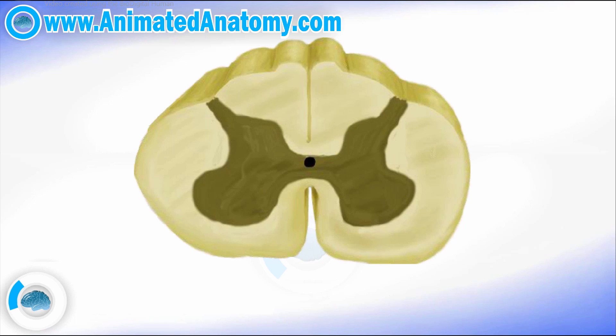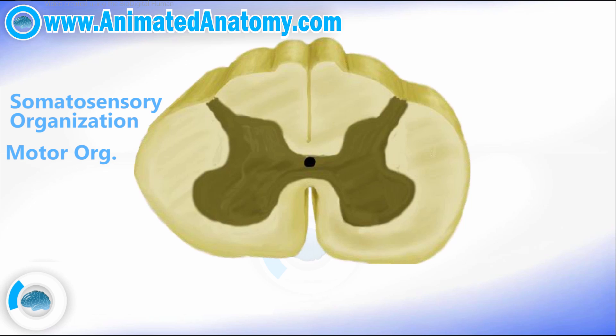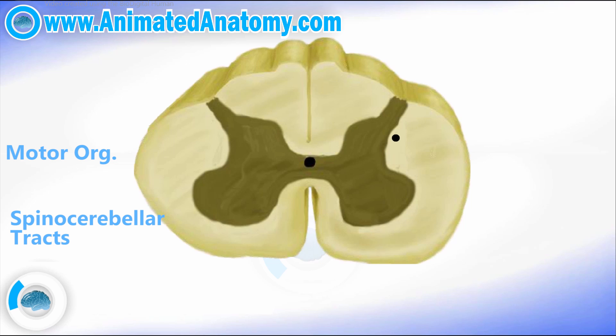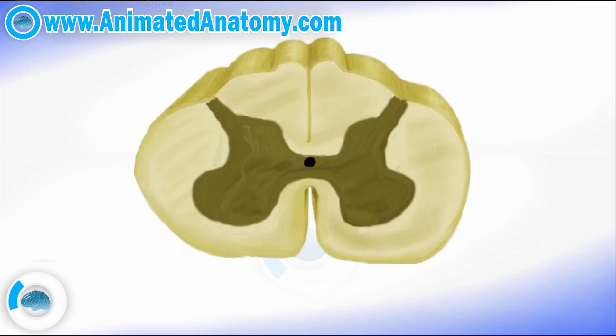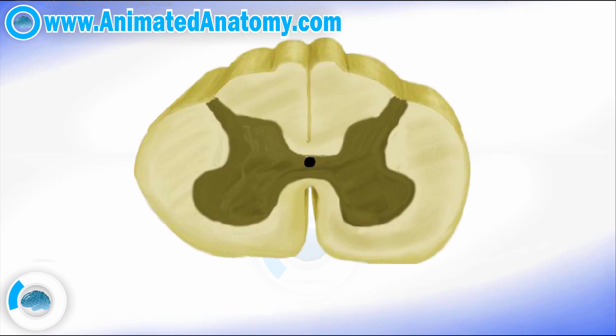There is the somatosensory organization, the motor organization, and the spinocerebellar tracts. I think it would be best to start with the motor organization. Basically, when we talk about the motor, those are the descending or the efferent pathways. They can be divided into the pyramidal tracts and the extrapyramidal tracts.